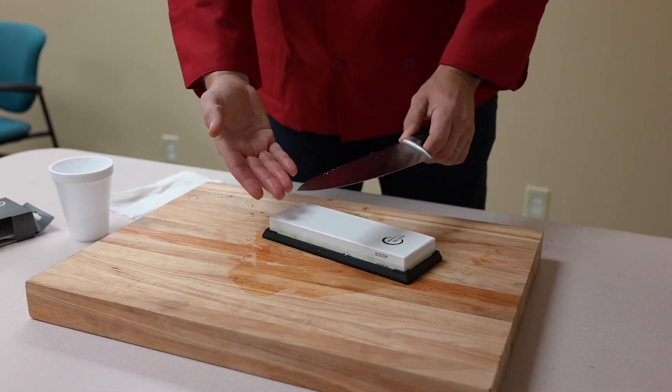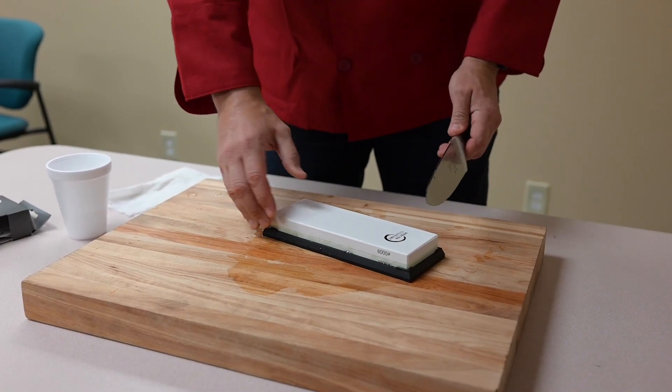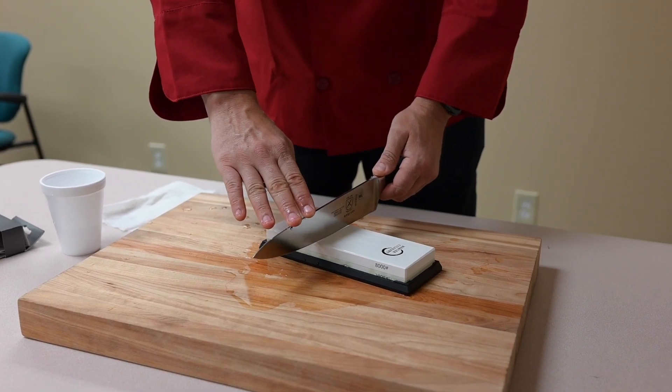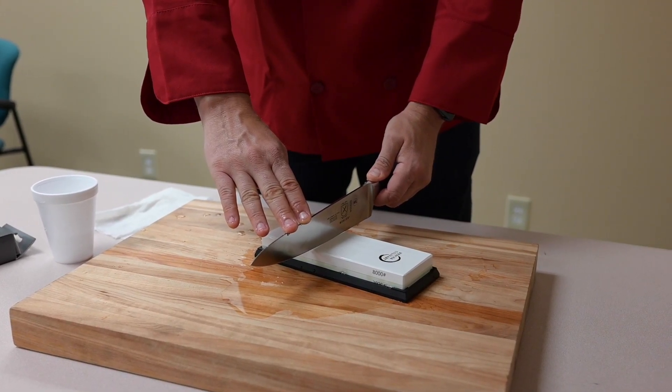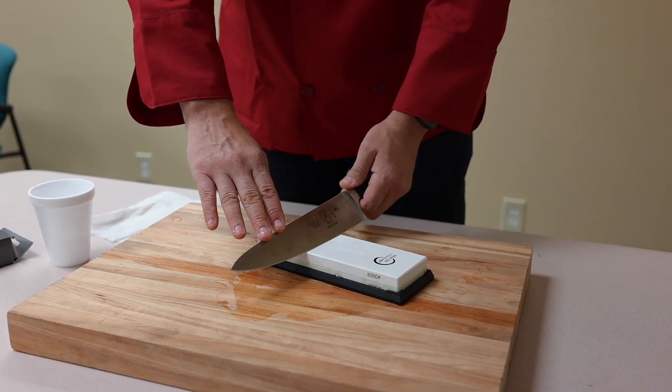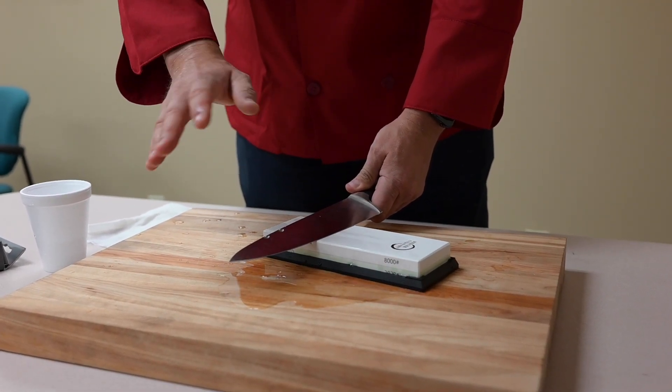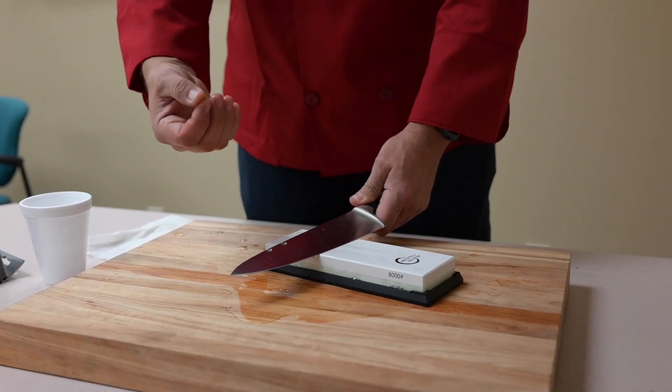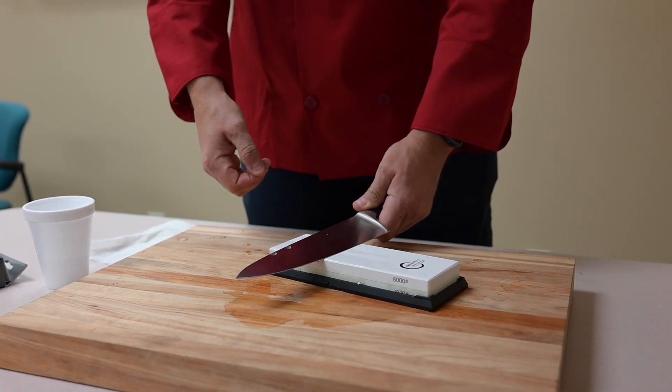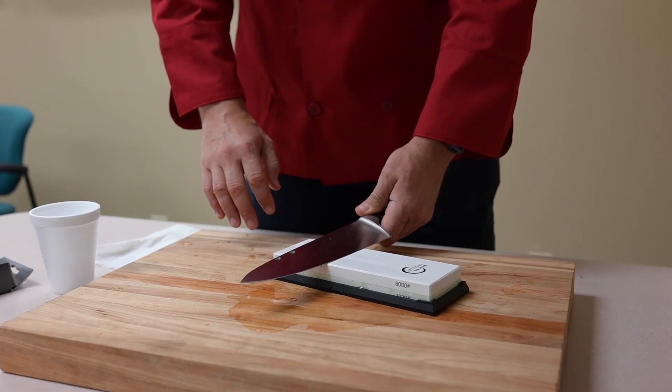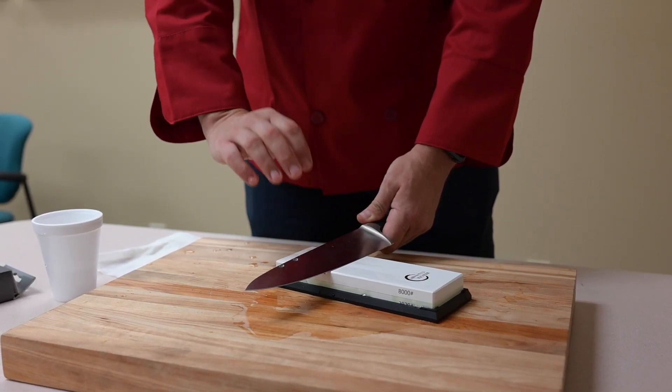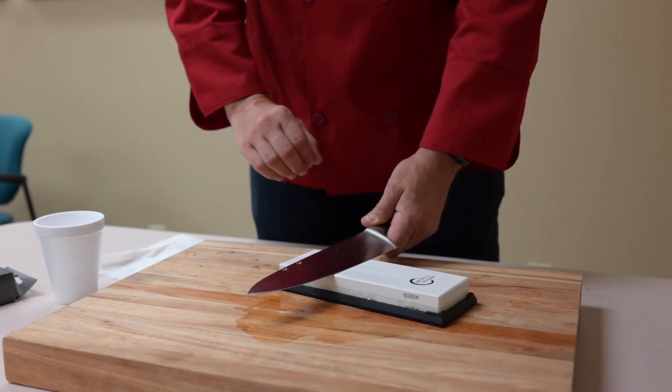So as we get ourselves set up on the sharpening stone, the way that I like to find the proper angle is to set the knife up perpendicular, 90 degrees to the stone, cut that angle in half and then cut it in half again. That gets me to be right around 20 degrees which for me personally is a sweet spot for my knives. Again everybody's different, but generally speaking a 20 degree angle is an ideal place to start.